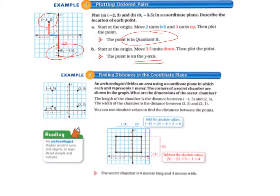So let's look at this. It says add the absolute values. So from the absolute value of negative 4, we have 4, and the absolute value of 2 is 2. So that equals 4 plus 2, which equals 6. So that's the length of the chamber. And then it says to subtract the absolute values. We have the absolute value of 5, so that is from 0 up to 5. And then we're subtracting the absolute value of 1, so that's from 0 up to 1. So that means we're subtracting 5 minus 1, which equals 4. So the width of our chamber is 4 meters. So the secret chamber is 6 meters long and 4 meters wide.